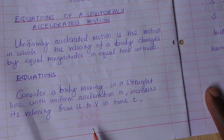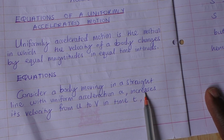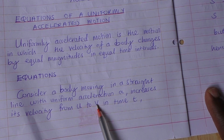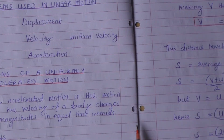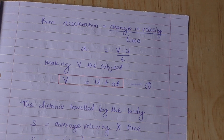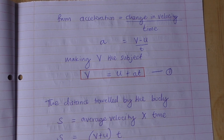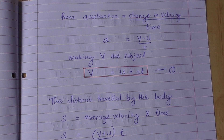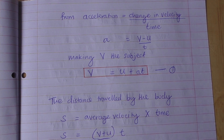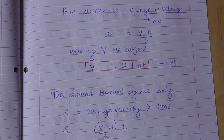We shall consider a body moving in a straight line with uniform acceleration a, which increases its velocity from u to v in time t. From acceleration, which is the rate of change of velocity, acceleration equals change in velocity over time — that is, final velocity minus initial velocity over time. Making final velocity v the subject, we get v = u + at. That is our first equation of a uniformly accelerated motion.